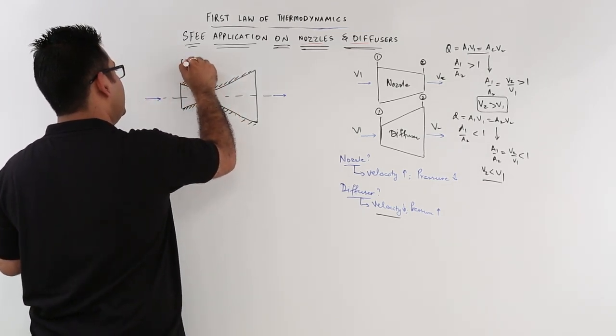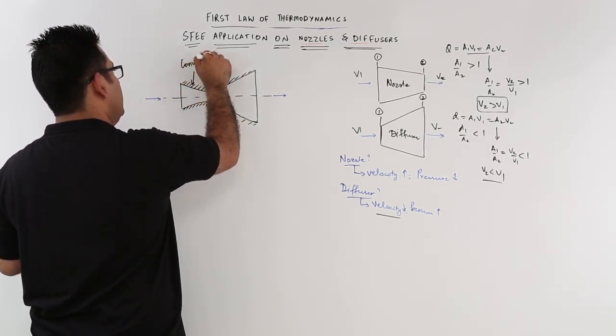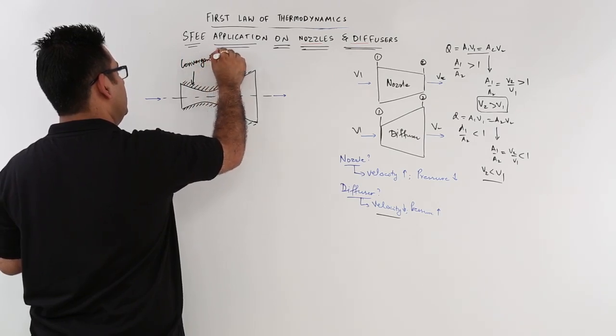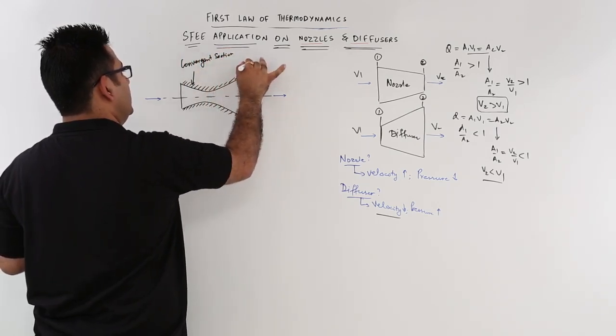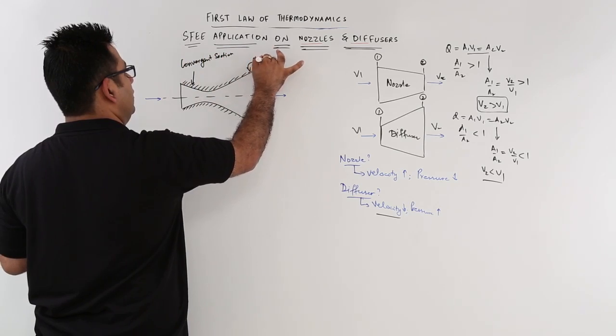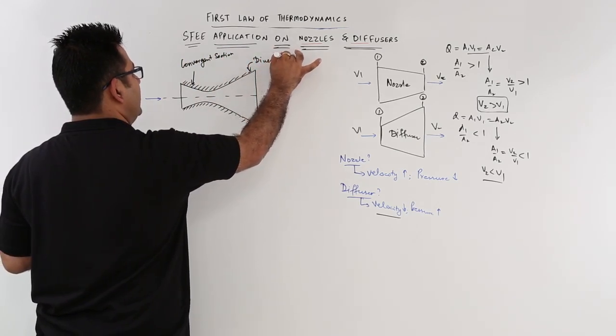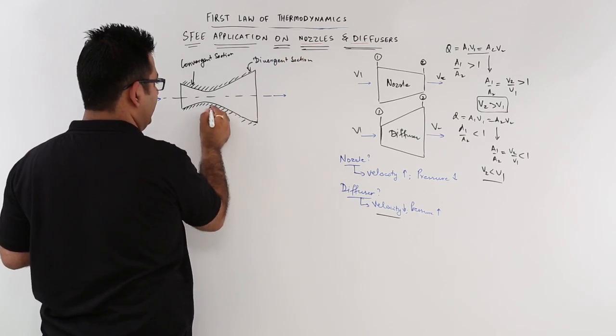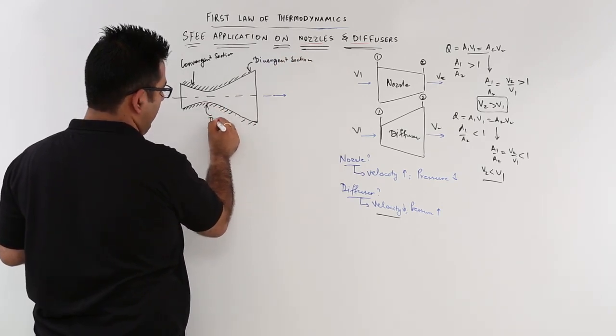So this part over here, this is the convergent section, this is the divergent section, and this part is the throat area.